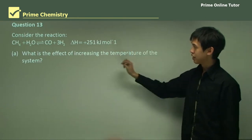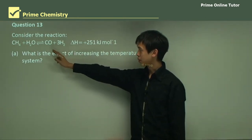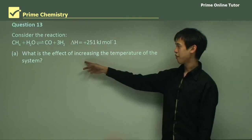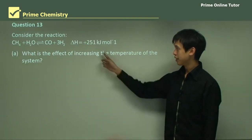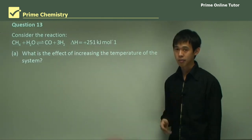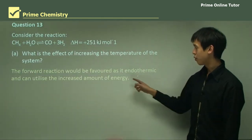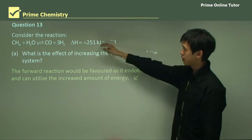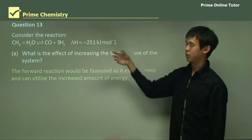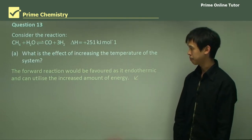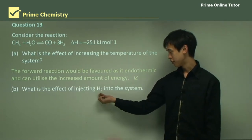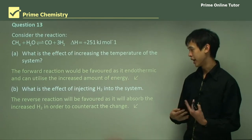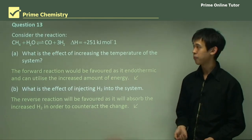Question 13: for the reaction CH₄ + H₂O → CO + 3H₂ (syngas), with ΔH = +251 kJ/mol, what is the effect of increasing the temperature? Since it's an endothermic reaction, the forward reaction will be favoured as it can utilise the increased amount of energy. What is the effect of injecting H₂ into the system? The reverse reaction will be favoured because it will try to absorb that H₂ in order to counteract the change.